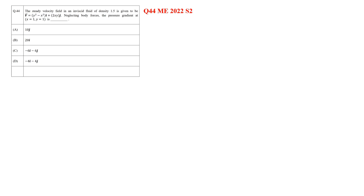Hi everyone, today we will be solving one question from fluid mechanics. It was asked in GATE 2022 Set 2 and it is based on the Navier-Stokes equation for viscous flow. In the question, a steady velocity field in an inviscid fluid of density 1.5 is given in vector form. We have to neglect the body forces and calculate the pressure gradient at x=1 and y=1 in vector form.